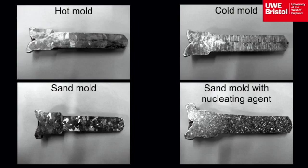The grains in the sand cast mould are larger than those found in the cold mould, and are more uniform in size and shape than the hot mould. The rate of cooling in this mould is more controlled, resulting in the uniformity.